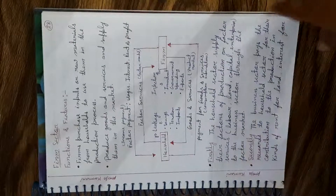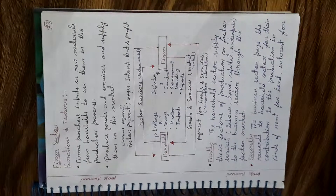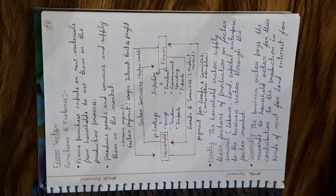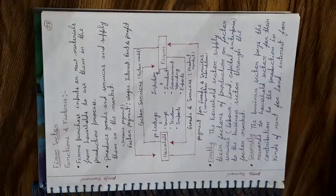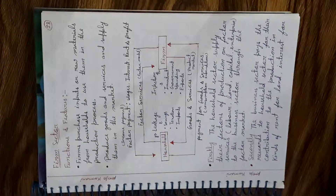Now we will go through the firms sector — its function and features. One minute, let me set this up. Firms purchase inputs and raw materials from households to use them in the production process. The second point is that firms produce goods and services and supply them in the market.